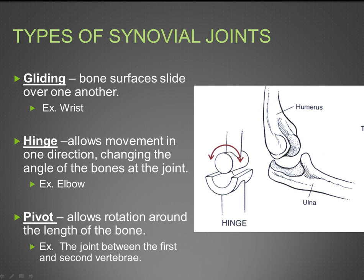There are several types of synovial joints. First is gliding, where bone surfaces slide over one another — for example, your wrist is an example of a gliding joint.